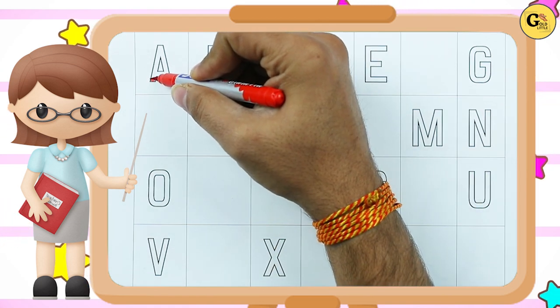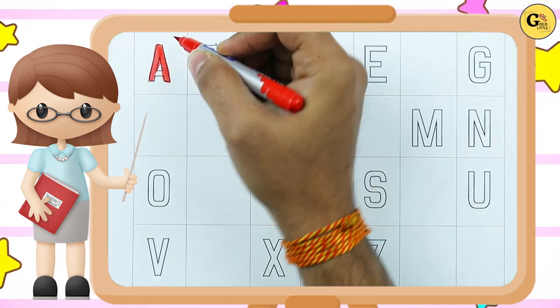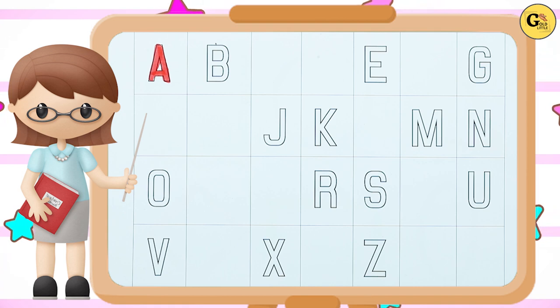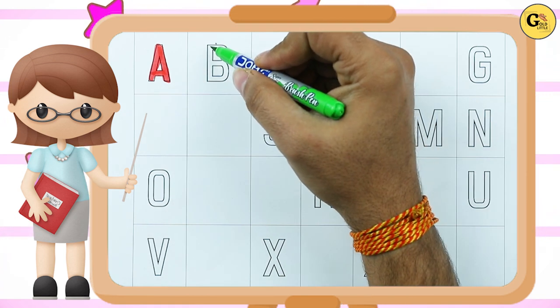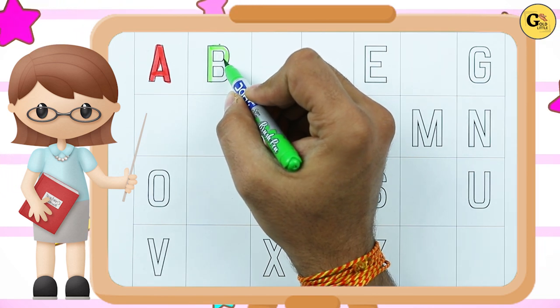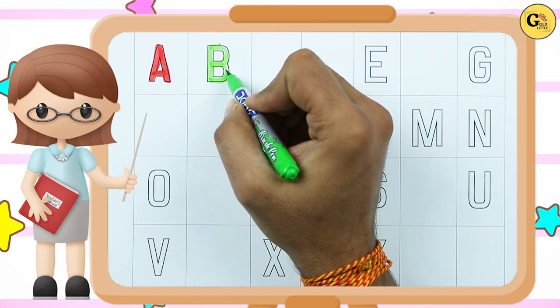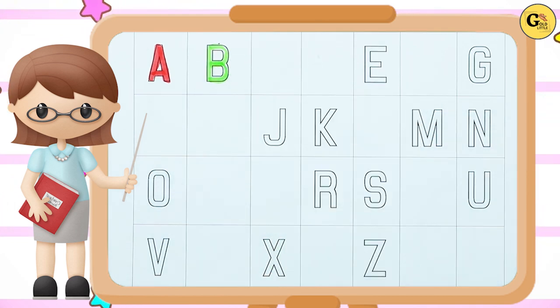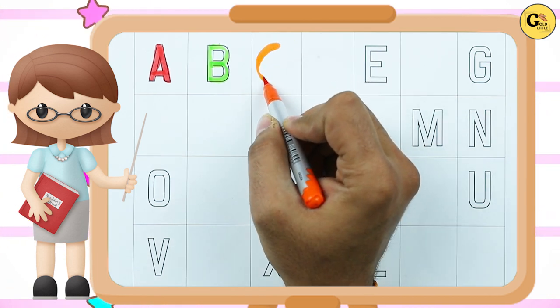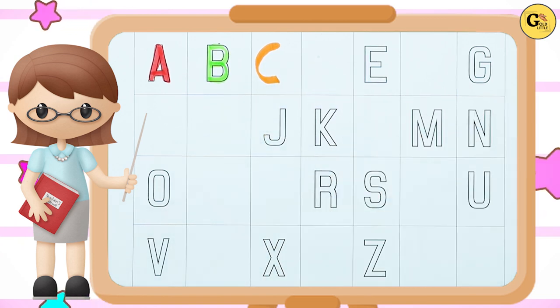A. A for apple with red color. A for apple. B. B for ball with green color. C. What's next? C. C with orange color. C for cat.